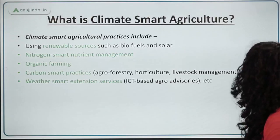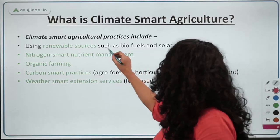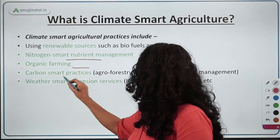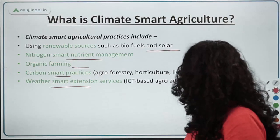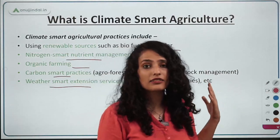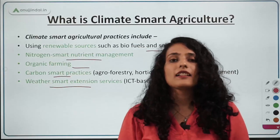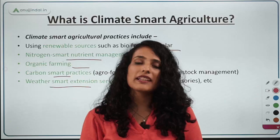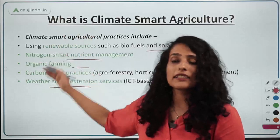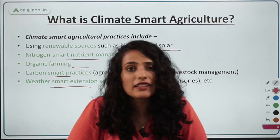Climate smart agriculture involves: renewable resources such as biofuel and solar energy; nitrogen-smart nutrient management; organic farming; carbon smart practices; and weather smart extension services — all crucial to making agriculture more resilient to weather extremities. Climate smart agriculture means building resilience against weather extremes through these integrated approaches.